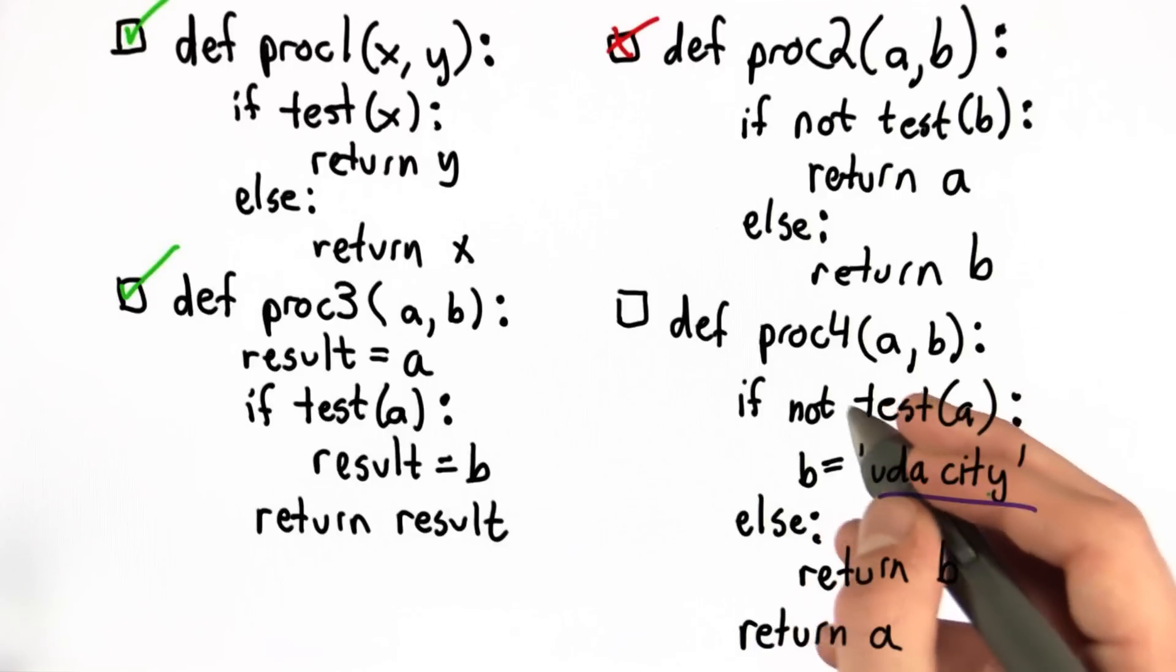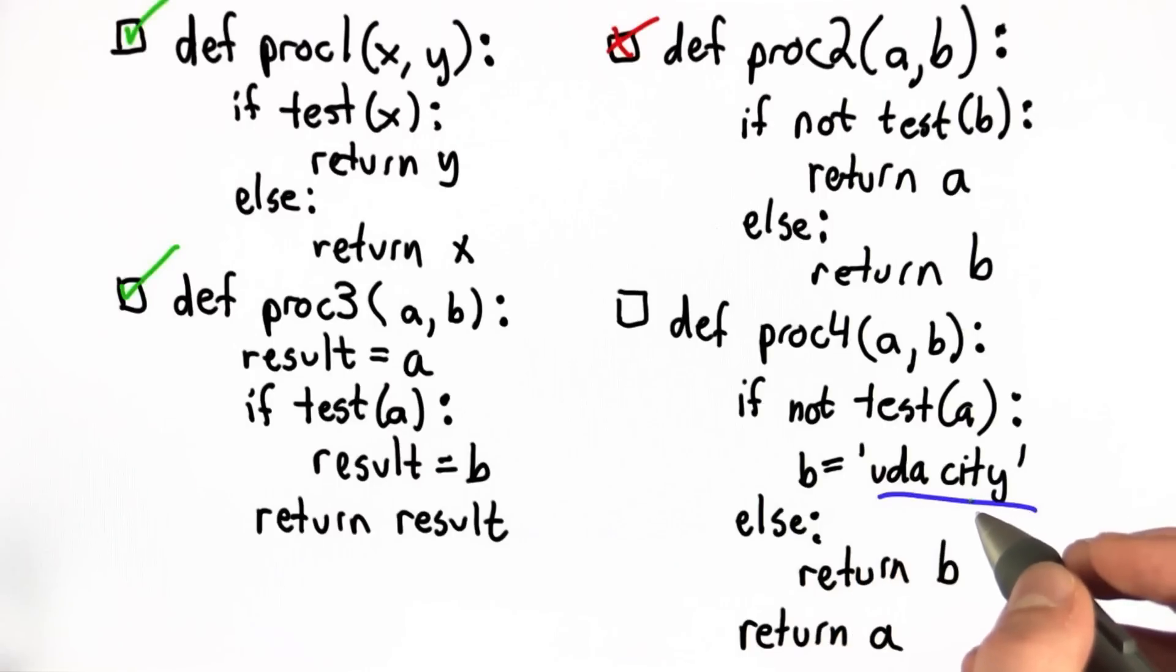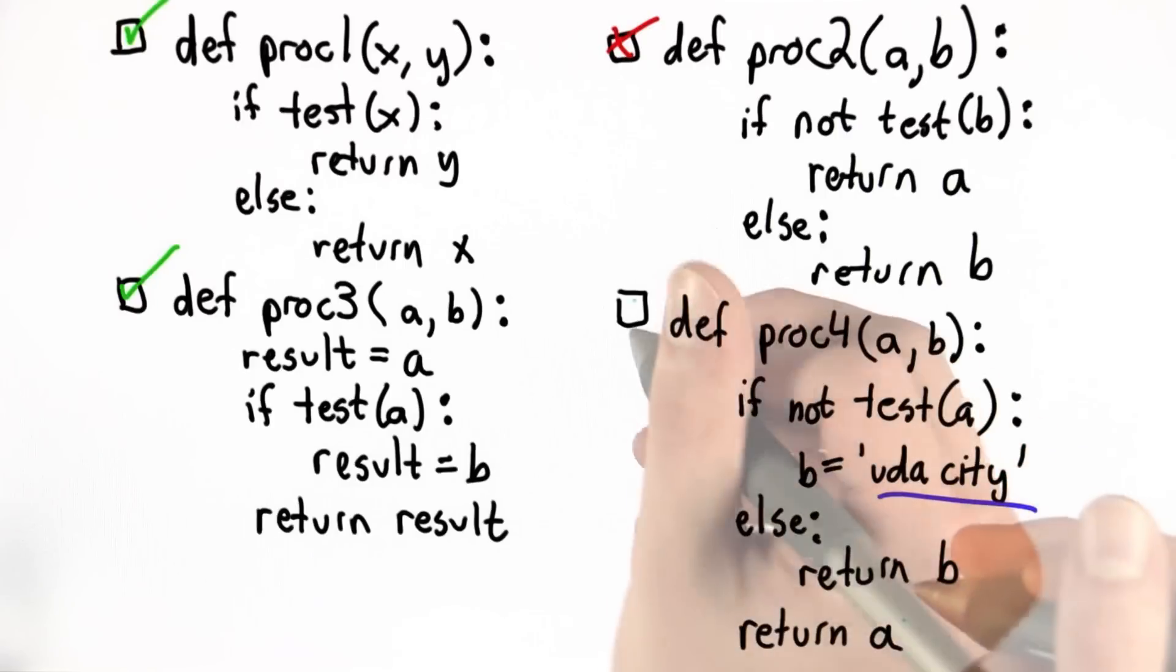If test a is false, not test a is true, so we set b to Udacity, but then we return a. If test a is false, we change the value of b, but we don't do anything with it. We just return a. So the result is the same as our original function proc.